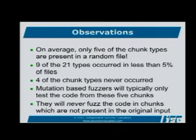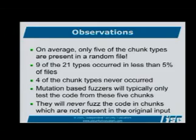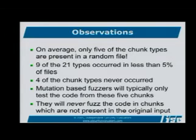If you pick a random file off the internet, it's probably going to have around five chunk types. The important thing is: assuming there's different code in the target program to process each chunk type, if you start with a PNG that doesn't have a particular chunk type, you're never going to fuzz the code that processes it. If you grab a file off the internet with only five chunk types and start fuzzing dumbly, you're only going to be fuzzing about five of the possible 21 functions. You'd think you'd done a great job, but really you wouldn't have fuzzed a lot of the code.